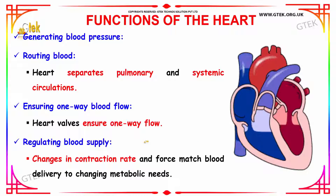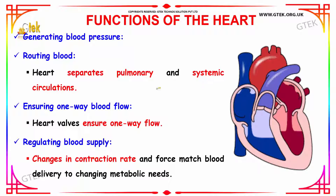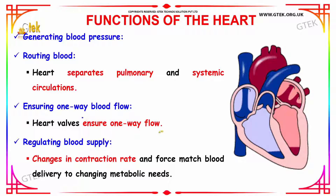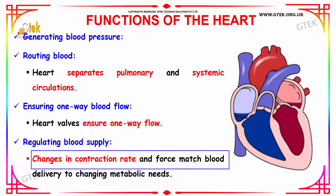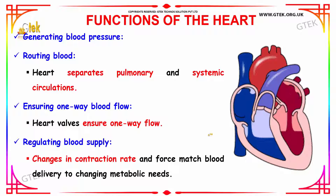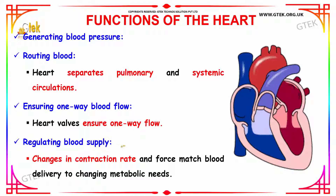Let us see the functions of the heart. The first function is generating blood pressure. The heart also routes the blood — it separates the pulmonary and systemic circulations. The heart valves ensure one-way flow of blood. And it regulates blood supply by changing the contraction rate and force to match blood delivery to changing metabolic needs. So generating blood pressure, routing blood, ensuring one-way blood flow, and regulating blood supply are the important functions of the heart.